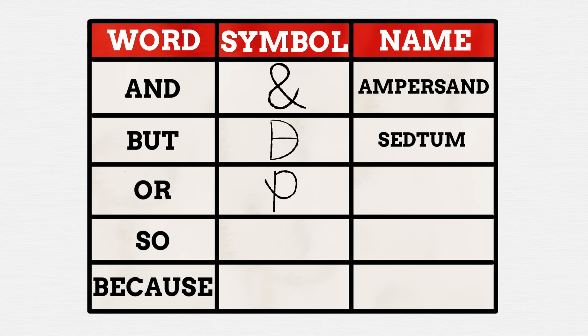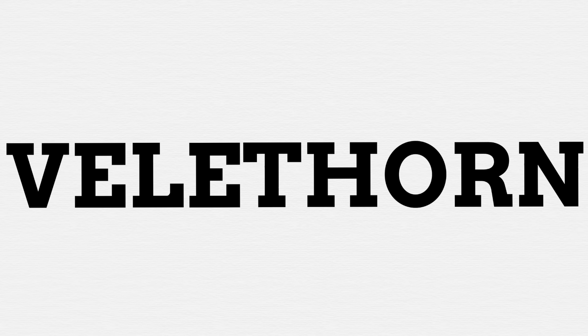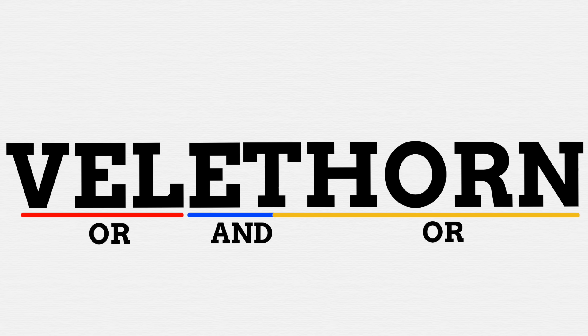I would call this symbol a 'vela thorn,' which is a combination of 'vel,' the Latin word for 'or,' and 'thorn,' as the symbol is a combination of those two elements.